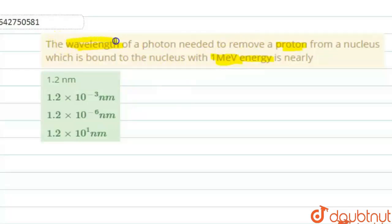So you're supposed to calculate the wavelength of a photon. How much wavelength of a photon is applied to the proton of a nucleus which is bound to the nucleus? Protons are bound to a nucleus, right?